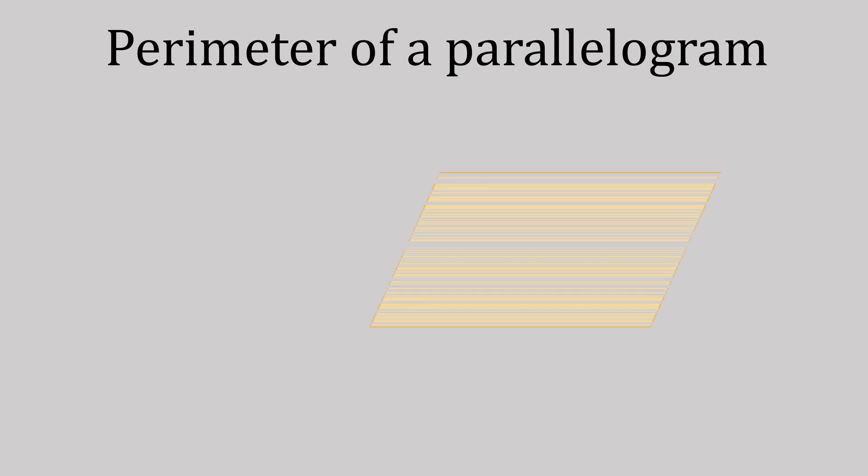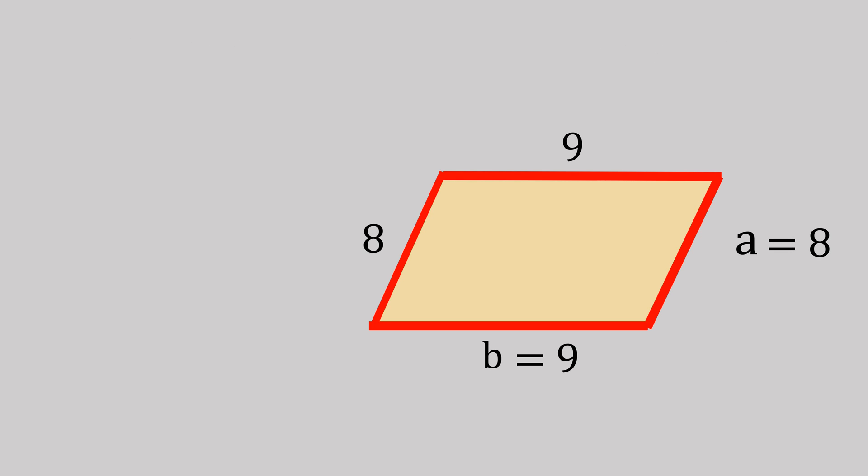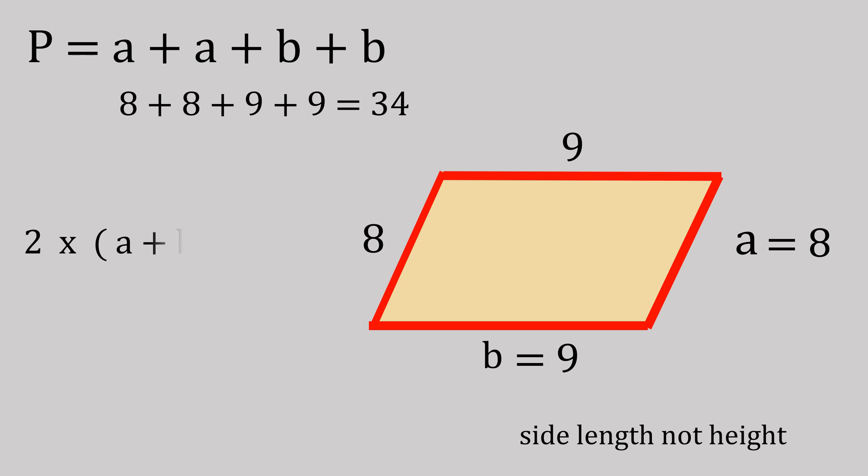So let's have a look at the perimeter of the parallelogram, which is the outline of the shape. Just like a rectangle, we would add a plus a plus b plus b, which would give us 8 plus 8 plus 9 plus 9, which is 34. Or a mathematical way, we would do 2 times (a plus b).